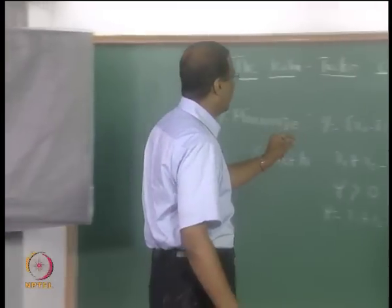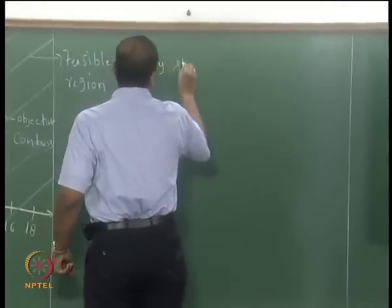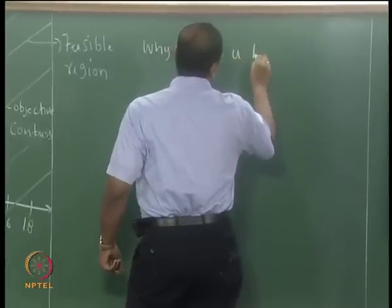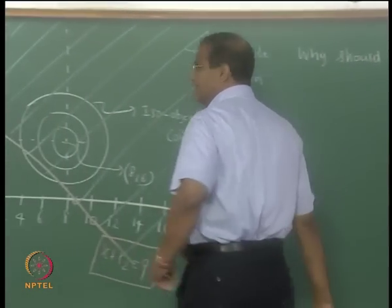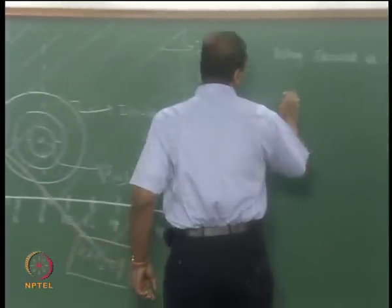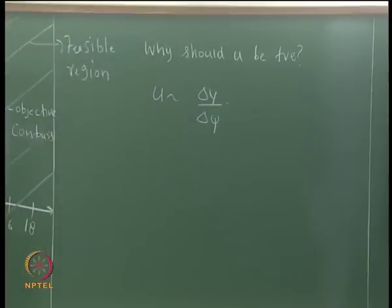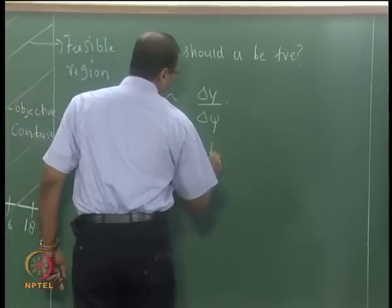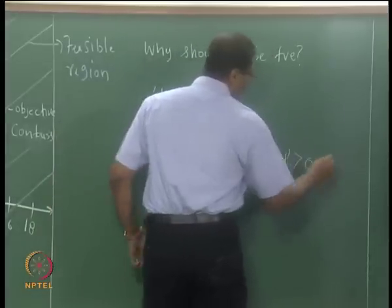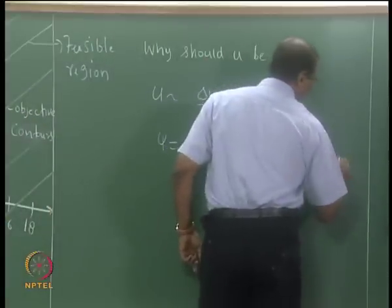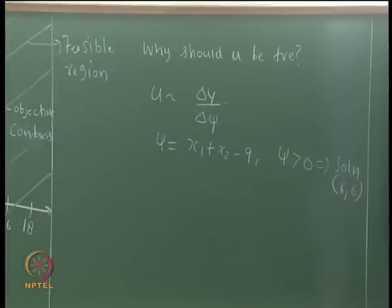Now we will look at why u should be positive. I said that u = ∂y/∂ψ, where ψ = x₁ + x₂ - 9. When ψ > 0, the solution was (8, 6).